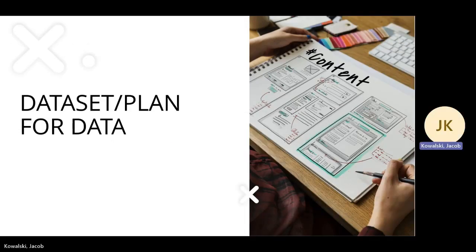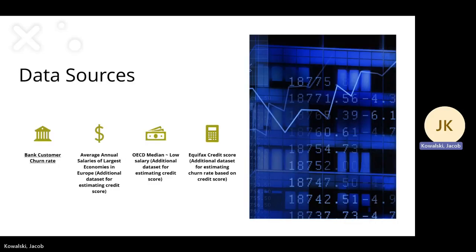Hello, my name is Jacob Kowalski, and today I'll be discussing our different data sets. We have four different data sets: the first is the bank customer churn rate, the second is the average annual salaries of the largest economies in Europe, the third is the OECD median to low salary, and the fourth is the Equifax credit score.